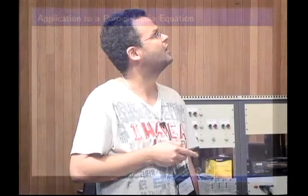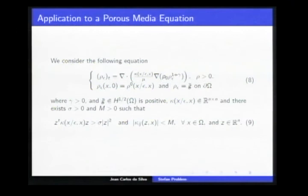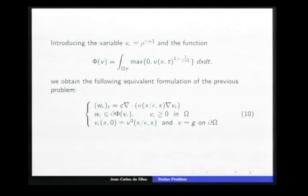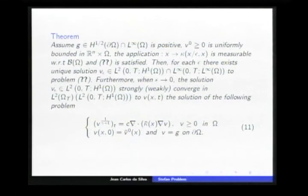This concludes our proof. Here we give an application to a porous medium equation. We consider the equation where gamma is positive and our matrix satisfies the stated condition and is bounded. Introducing this variable and defining this function phi gives an equivalent formulation of our homogenization problem. Due to our homogenization of the Stefan problem, we have the following theorem: for each epsilon, the unique solution V-epsilon strongly converges to a function V that satisfies that equation. Thank you.